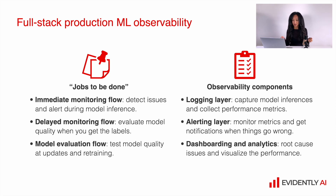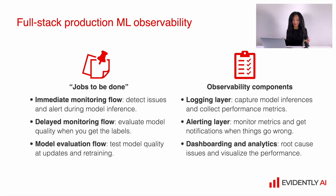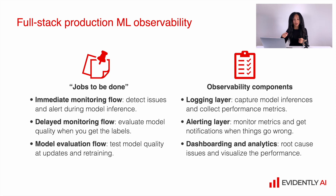After we implement monitoring, we need to implement an alerting layer, because we do not want to constantly check our monitoring dashboard and visually see what's going on. We want to get alerts so that we know something went wrong and we need to intervene and fix things. We also need to provide our engineers and analysts with a lot of context so they can understand what's going on with our models — this is why dashboarding and analytics is very important. Root cause analysis and visualization of performance helps to quickly fix problems with the model and maybe design better training and retraining approaches to increase the quality of your services.